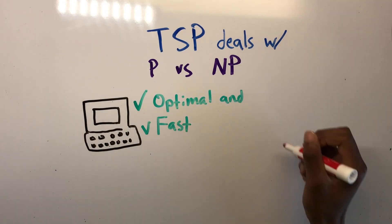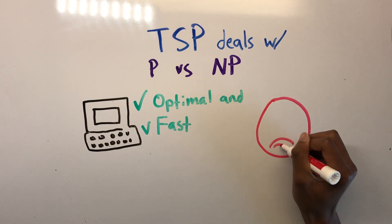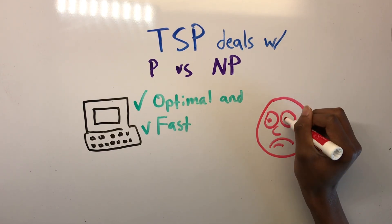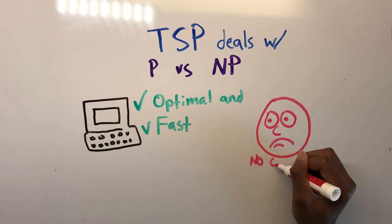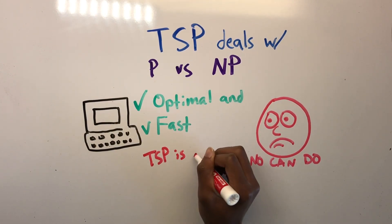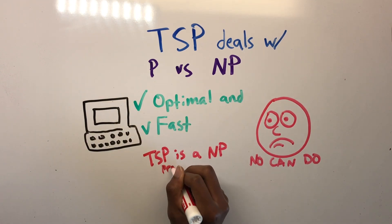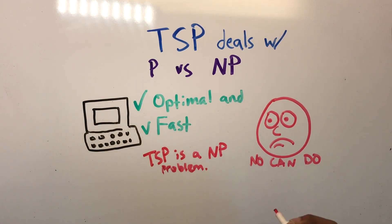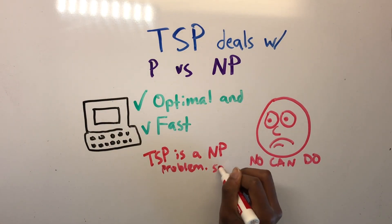If one was to create an algorithm that found the optimal tour to any TSP very quickly, it would solve the P versus NP problem and prove that P is equal to NP. Unfortunately, that has not been done. The traveling salesman is an NP problem and so far it has been impossible to find a polynomial algorithm.